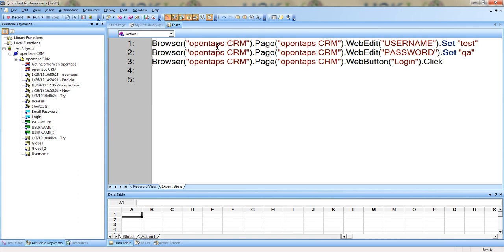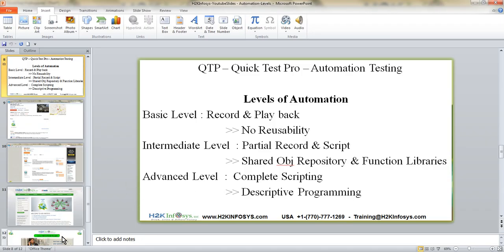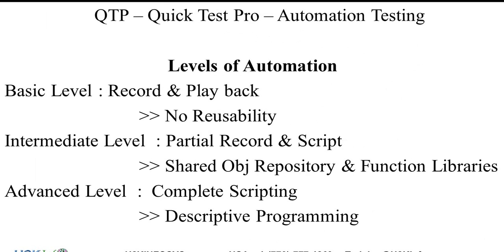So this is how you develop scripts at the intermediate level. The next level is descriptive programming — the advanced level — which we will discuss in the third presentation. There we'll talk about the disadvantages of the intermediate level and how to overcome those problems at the advanced level. Basically, what we covered previously was the basic level, and today we covered the intermediate level. In the next presentation we'll discuss the difference between intermediate and advanced level.